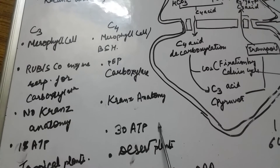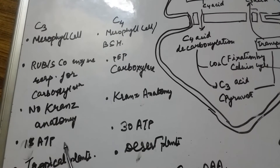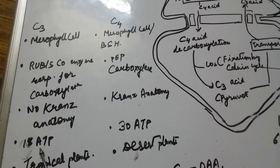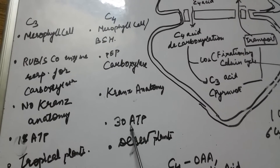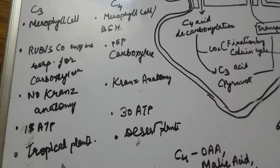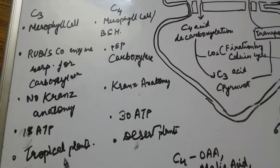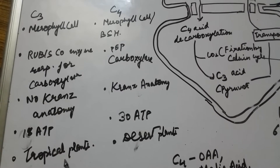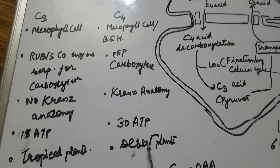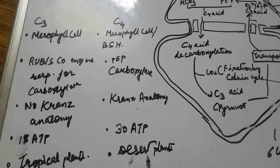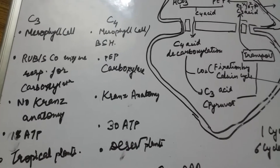ATP utilization is 18 ATP in C3 plants and 30 ATP in C4 plants. Examples of C3 plants include tropical or temperate plants, while C4 plants are typically desert plants where temperatures are very high.